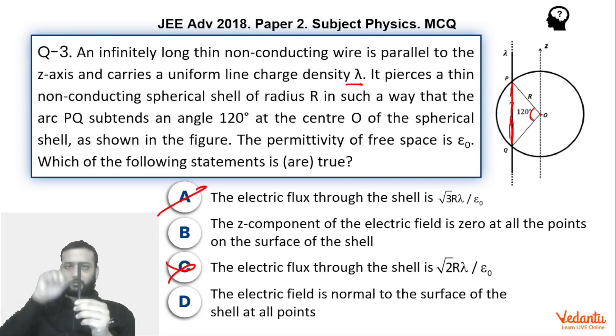Now if you see this, suppose this is the wire. At this point the field will be going in this direction. At this point field will be going in this direction. At this point field will be going in this direction. At this point field will be going in this direction. So basically you can see that field is always horizontal.